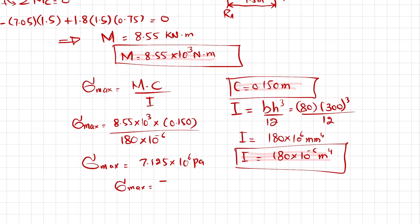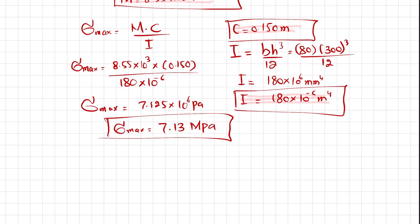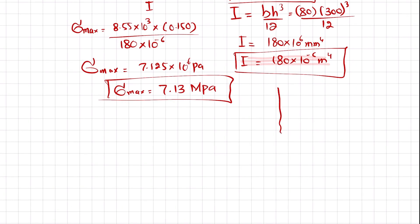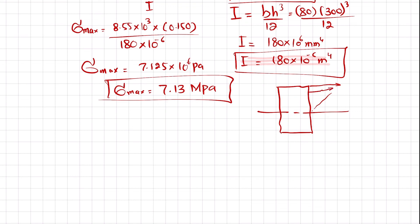This is the answer. Drawing the stress distribution on the cross-section at C: the maximum stress occurs at the outermost fibers and is zero at the neutral axis.